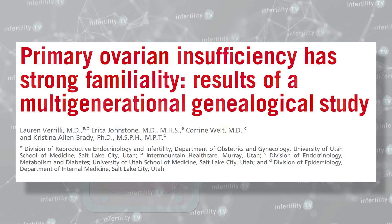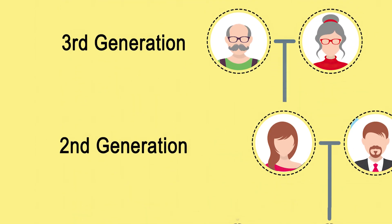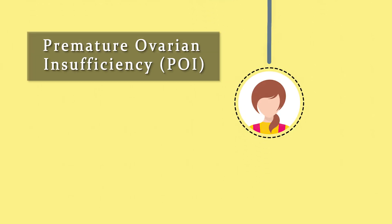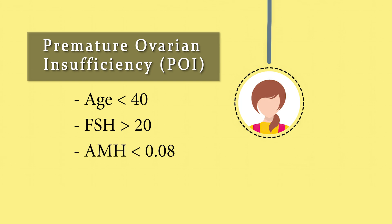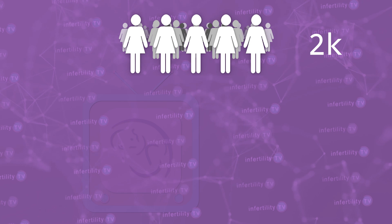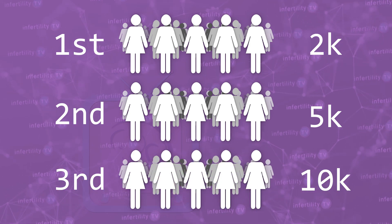Since genetic mutations and variations are inherited, it is possible for these problems to run in families. Researchers conducted a study in the state of Utah, which has a database linking medical information from millions of people with their family ancestry — over 2 million people in the database have at least 3 generations of information available. They looked at people with premature ovarian insufficiency, or POI, defined as women under the age of 40 with an FSH over 20 or an AMH less than 0.08. They identified about 400 individuals with POI who had at least 3 generations of ancestry data, along with over 2,100 first-degree relatives, over 5,000 second-degree relatives, and over 10,000 third-degree relatives.